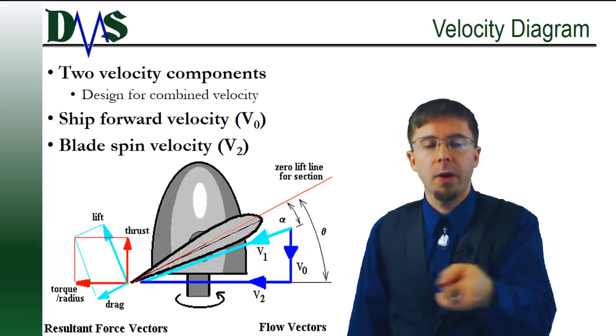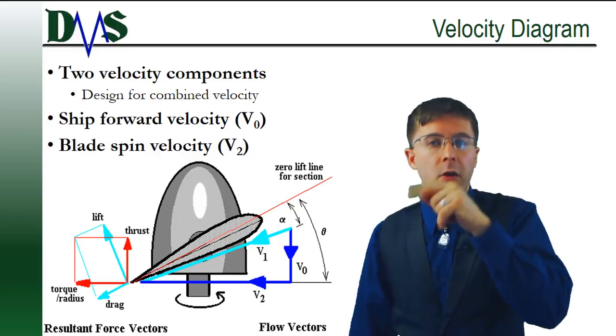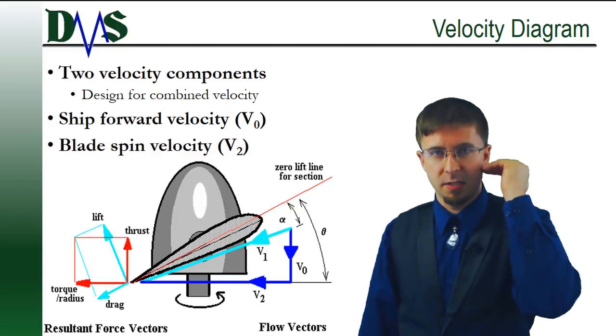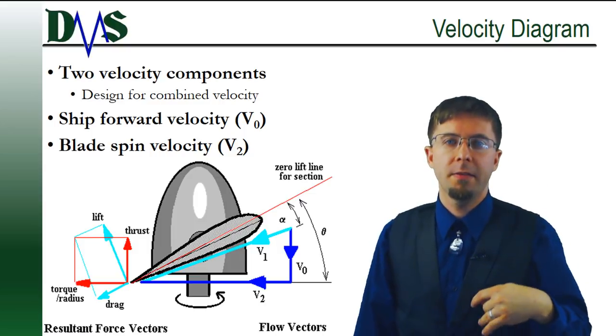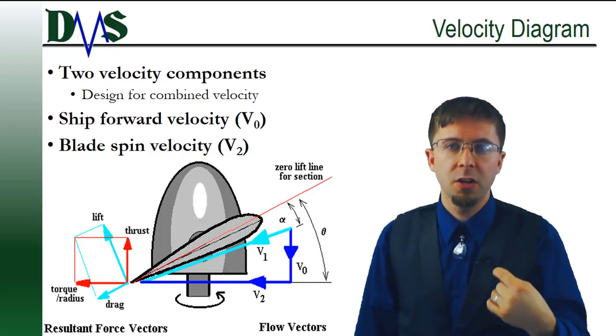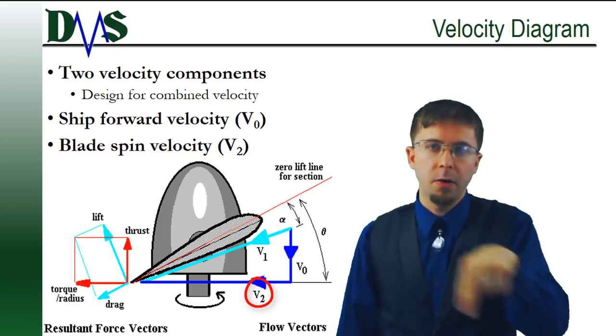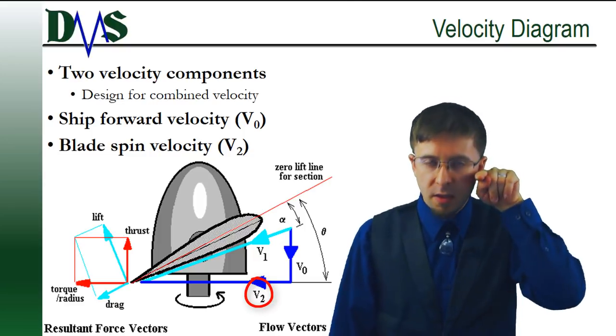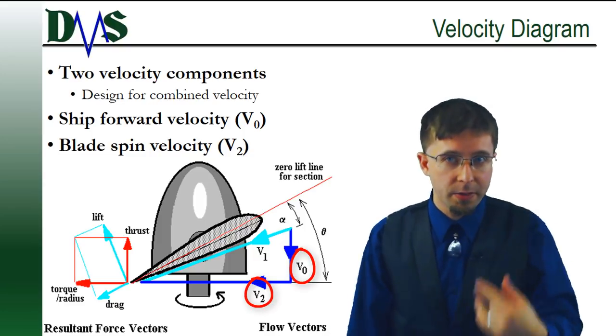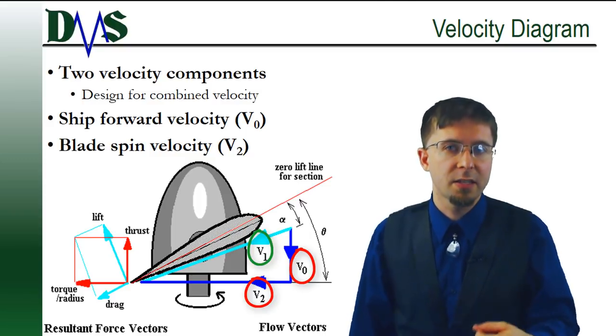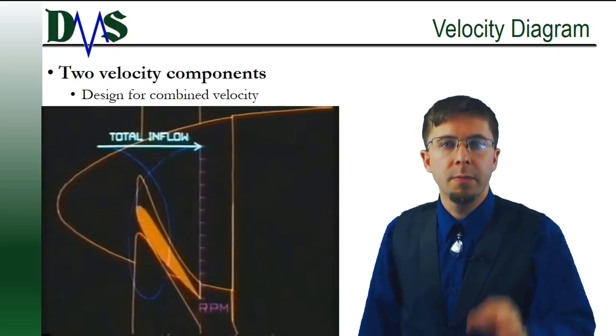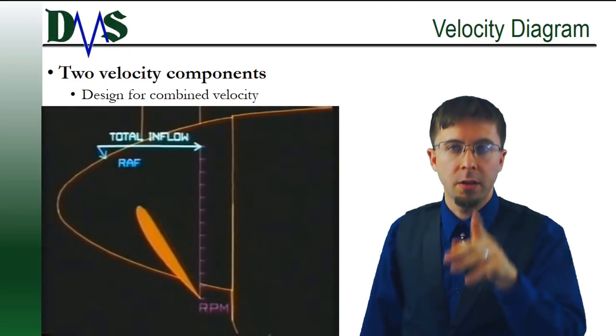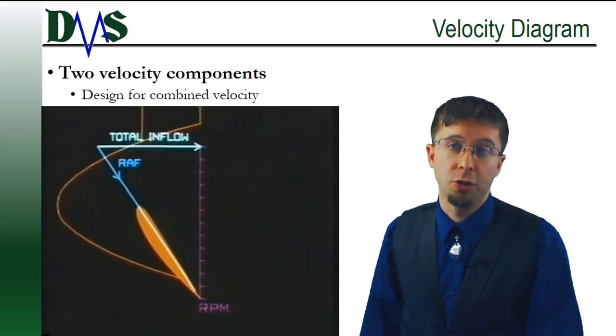So if we were to take a slice, a section along the propeller blade, we would find that the velocity there was the addition of the spinning motion and the forward velocity. You add those two together and that's the velocity that the blade section sees. That combined velocity is key because that's the flow direction that we have to design our blade section to.